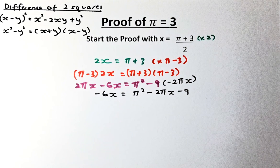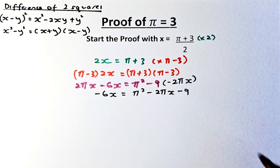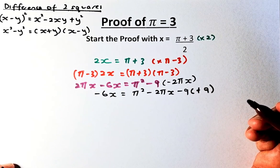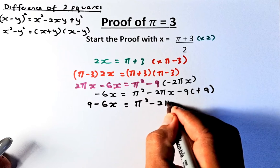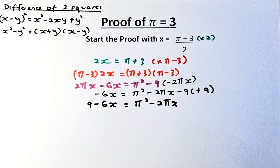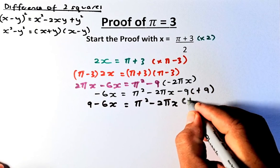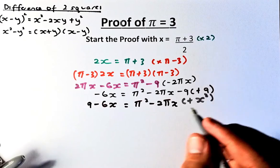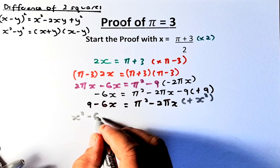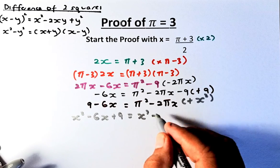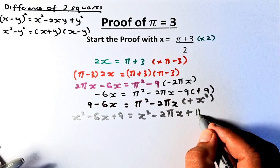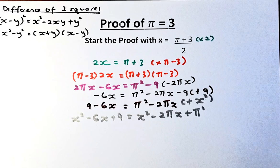Next, we get rid of the 9 by adding 9 to both sides. The left-hand side becomes 9 minus 6x, and the right-hand side becomes pi squared minus 2pi·x. Then we add x squared to both sides and rearrange, giving us x squared minus 6x plus 9 on the left, and x squared minus 2pi·x plus pi squared on the right.